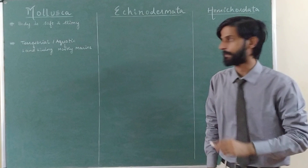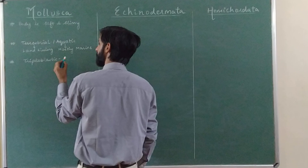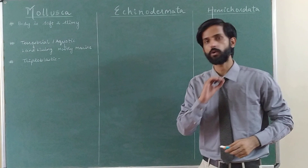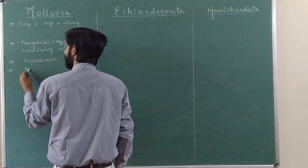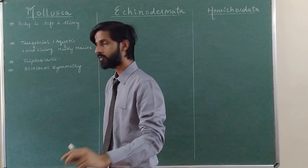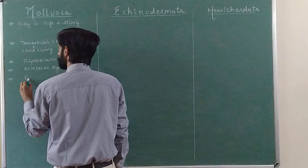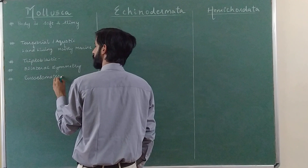Their body is derived from three germ layers, which is why they are called triploblastic. Triploblastic means the body is made from three germ layers: ectoderm, mesoderm, and endoderm. Talking about their symmetry, their body is bilaterally symmetrical. For their body cavity, they are eucoelomates, meaning they show a true cavity.